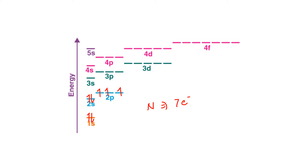If we want to write the electronic configuration of nitrogen from this orbital diagram, we write it as 1s², 2s², 2p³. The orbitals have certain energies, and electrons revolve around the nucleus in these orbitals. We don't write exact energy values here, but if we want to know the exact energy of each electron in an atom, we can use the technique called PES, or photoelectron spectroscopy.